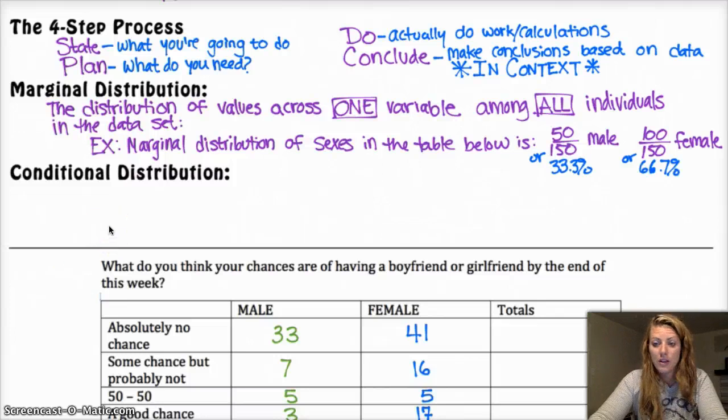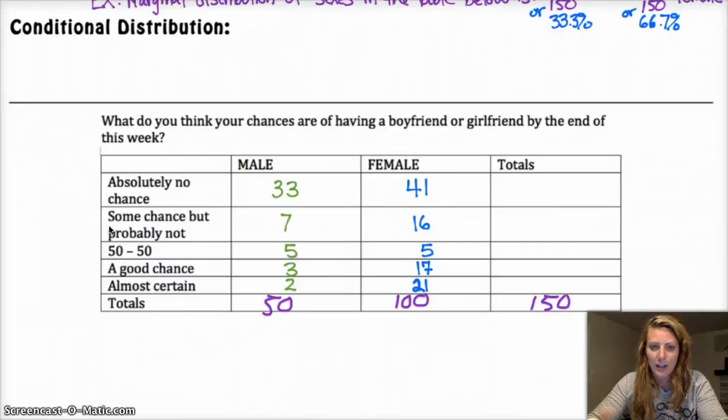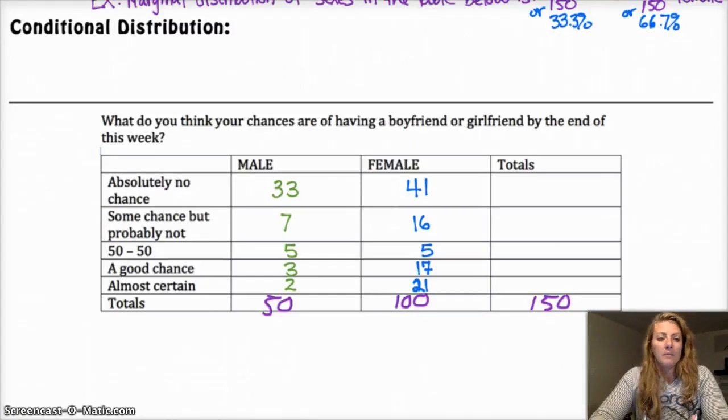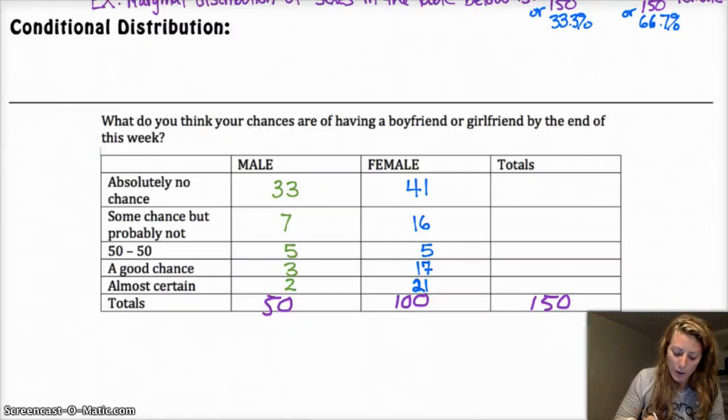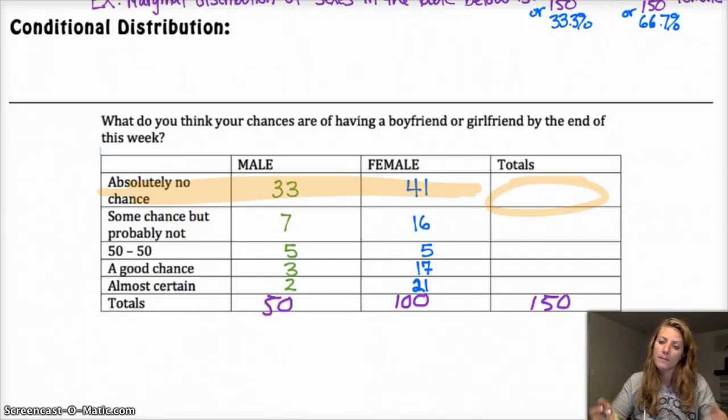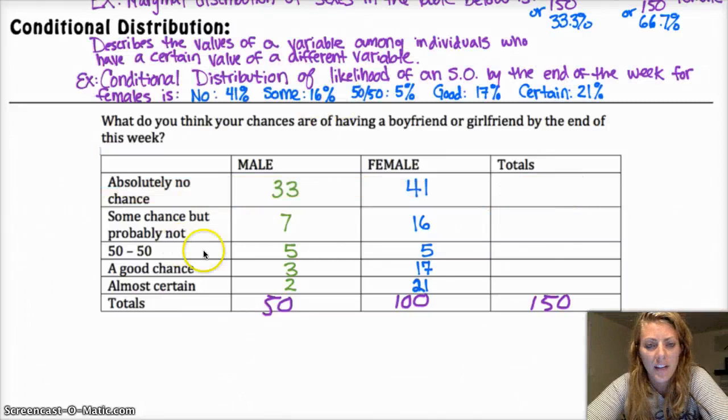Conditional distribution, on the other hand, you're looking at among a single variable, what's the distribution of the other variable? So for example, among males, what's the distribution of the likelihood of having a significant other by the end of the week? Or of all the people who are almost certain what percent were female and what percent were male. And so you're looking within one single row, kind of the distribution. So the total for a conditional distribution would be the total of the row or the total of the column, depending on what the variable is you're interested in. And my percentages just came from 41 out of 100. So I'm only looking at my total females.